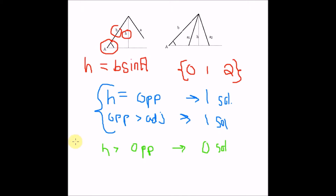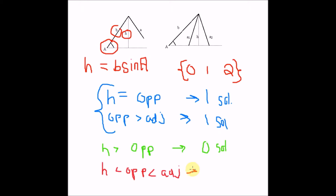Finally, if our height is less than our opposite side and the opposite side is less than our adjacent side, then two triangles are possible — two solutions. So we see what H is used for in this case and we now know how to find it.